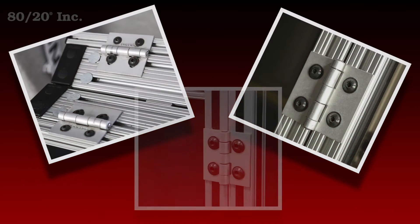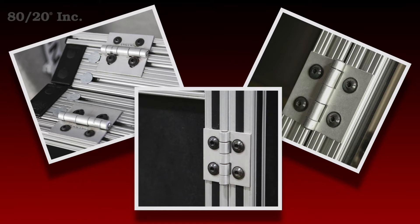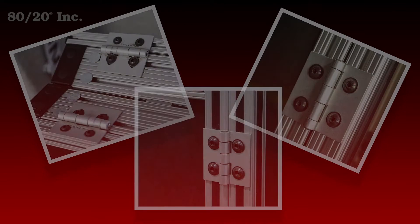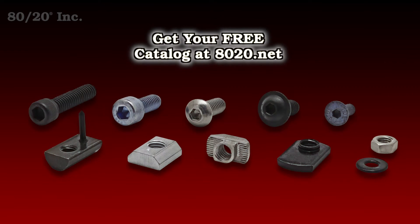The standard metal hinge comes in both black and bright zinc. It requires no machining to install but does require a bolt assembly. More information on 8020's recommended bolt assemblies can be found in the 8020 product catalog.